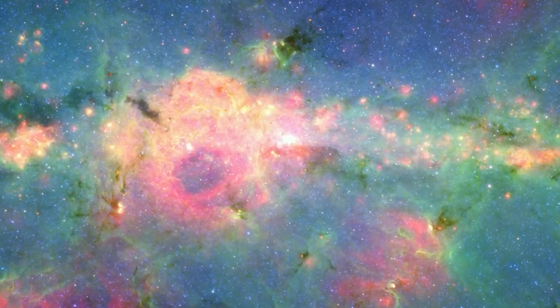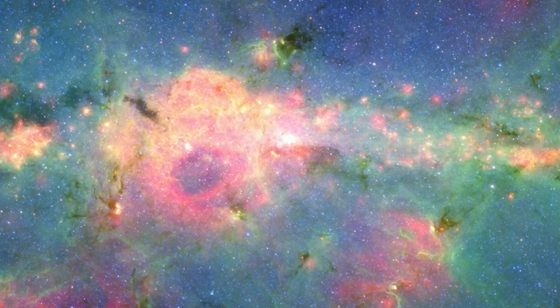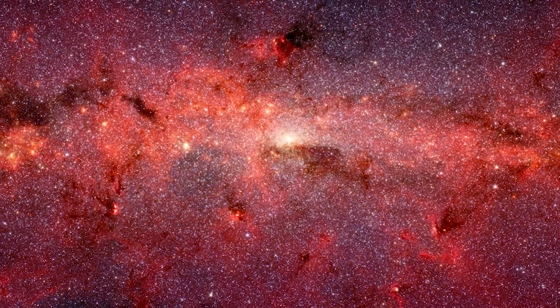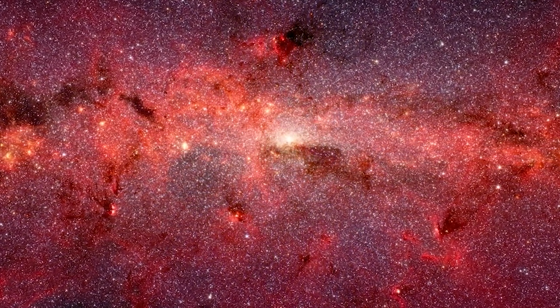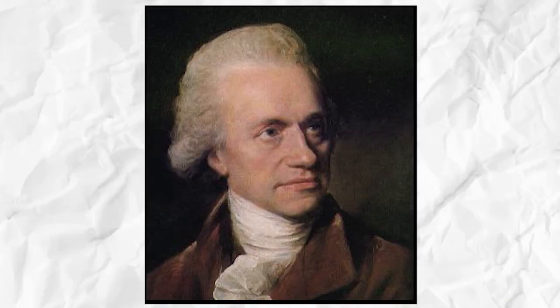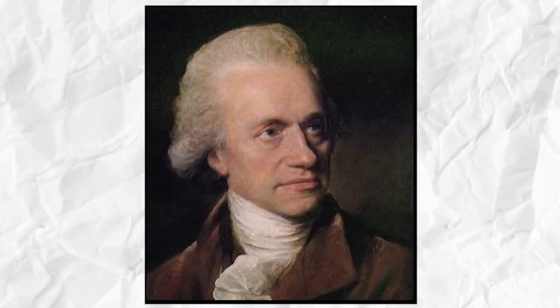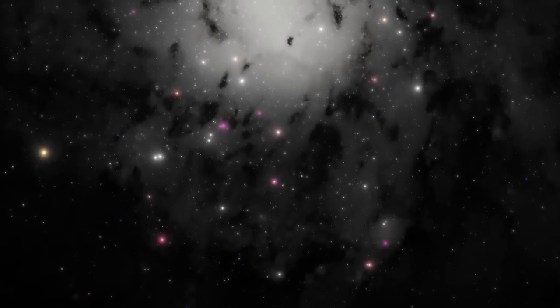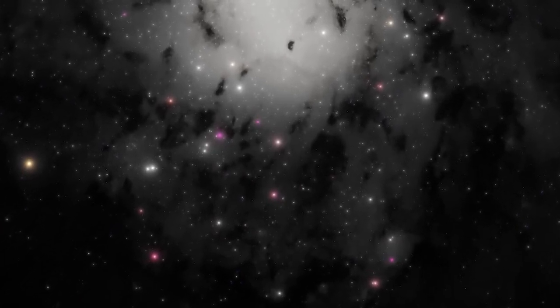Messier 33's discovery can be traced back to the 17th century, when Italian astronomer Giovanni Battista Hodiana first observed it. However, it was Charles Messier who independently rediscovered the galaxy in 1764 and added it to his renowned catalog of celestial objects.